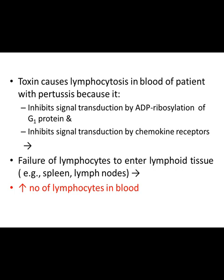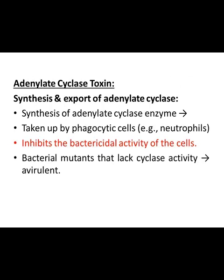This toxin causes lymphocytosis in the blood of patients with pertussis. It inhibits signal transduction by ADP-ribosylation and inhibits signal transduction by chemokine receptors. When this occurs, there is failure of lymphocytes to enter the lymphoid tissue, so lymphocytes accumulate in the blood — this is known as lymphocytosis.